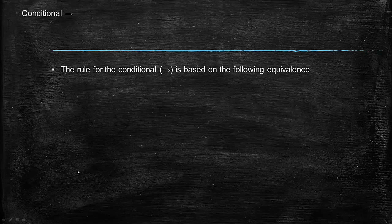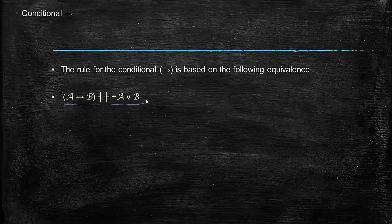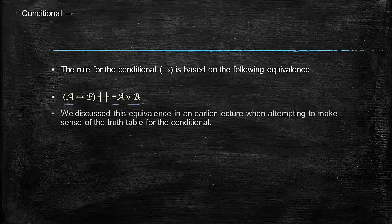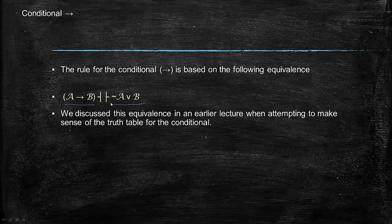The rule for the conditional is based on this equivalence: 'if A then B' is logically equivalent to 'not-A or B'. We actually discussed this when we were talking about truth tables. If you say 'if A then B', that means either you don't have A, or you do, in which case you have B. So 'if A then B' means either not-A or B.